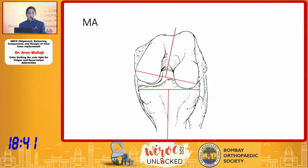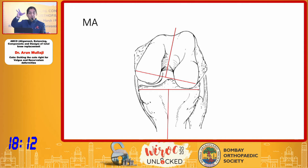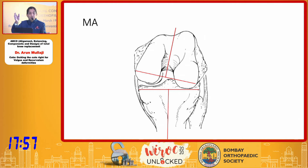This is the extension gap. You may also have an imbalance in flexion. In mechanical alignment, your tibial cut is at 90 degrees, and to get your gap right, your femoral cut will require you to cut more. You either have to release laterally to get it balanced, or if you do not wish to do releases, you will end up internally rotating the femoral component to achieve balance. Remember that the femoral component is not designed for internal rotation for the patella, but that may happen in a very severe deformity.